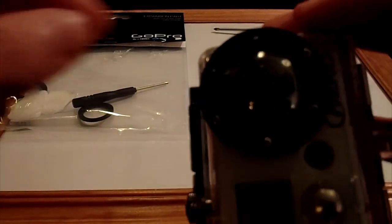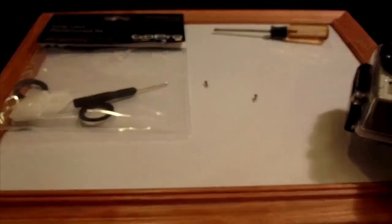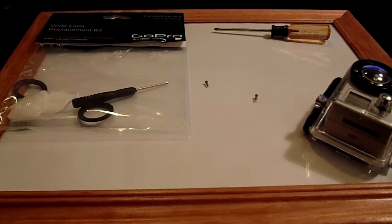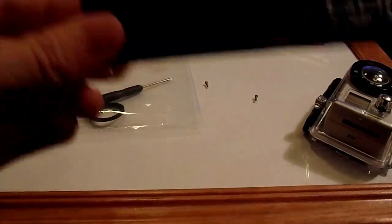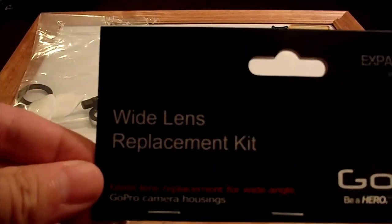So my GoPro camera, you can't really see it, but I have a little chip in the outside lens and I'm going to show you how to replace it. Pretty much you go to gopro.com. I haven't found a store locally that sells the replacement kit, but you get this called the wide lens replacement kit.